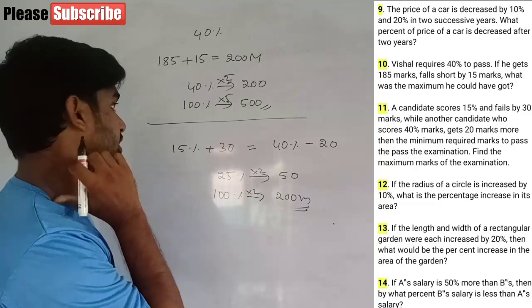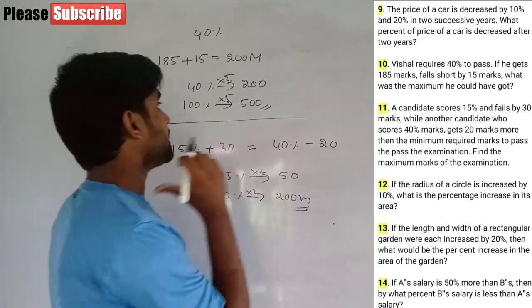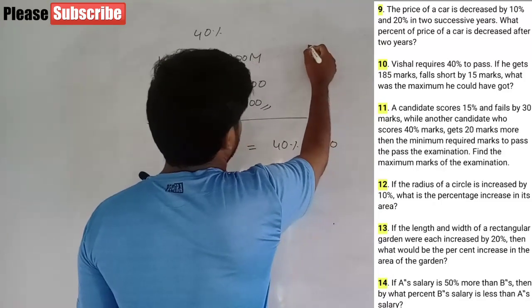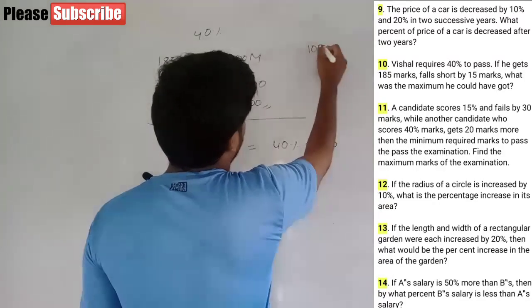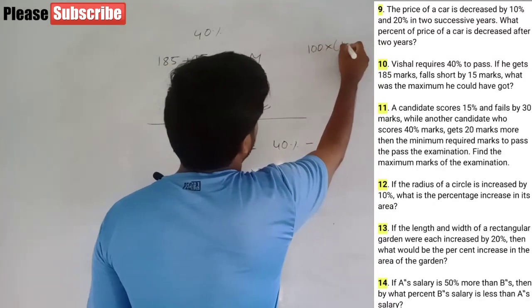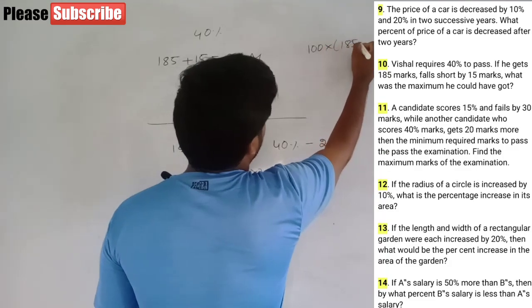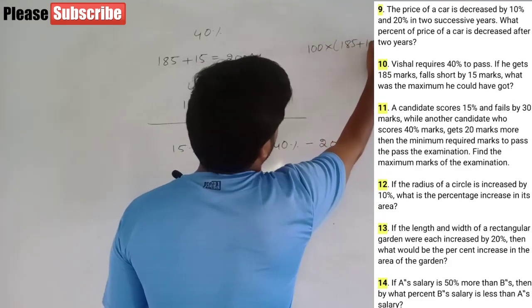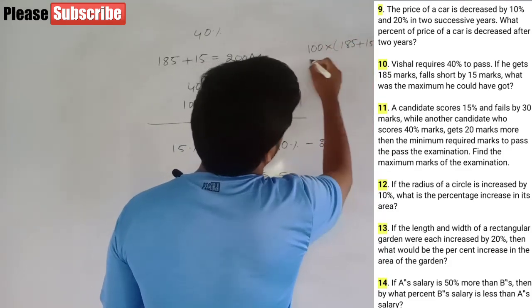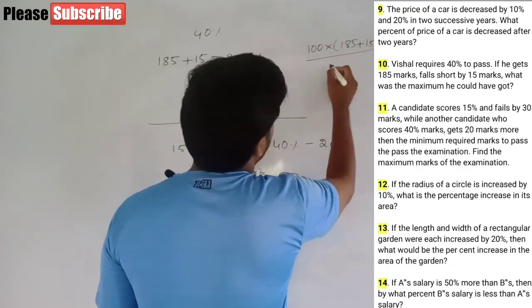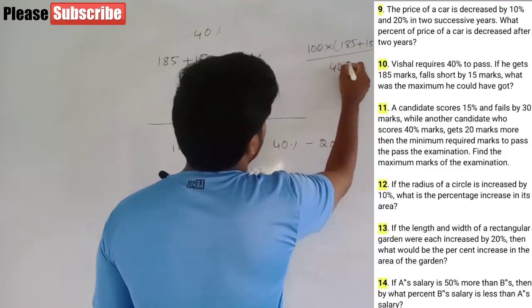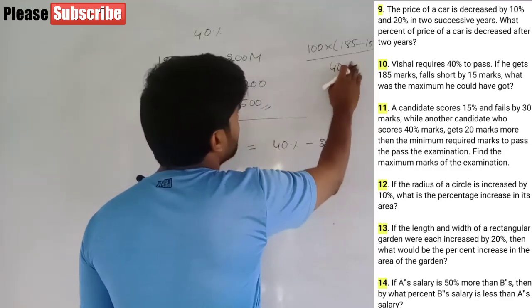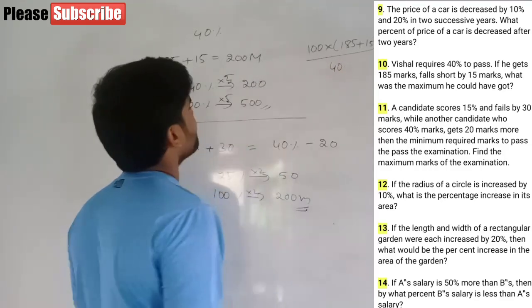Shortcut: 100 times (marks difference) divided by (percentage difference). Here it is 100 times (30 plus 20) by (40 minus 15).